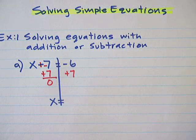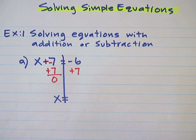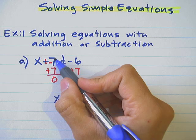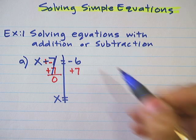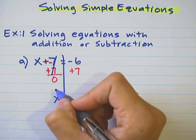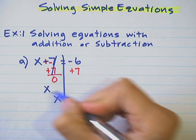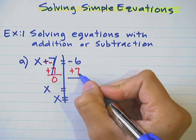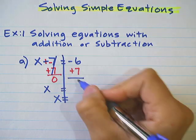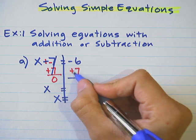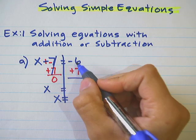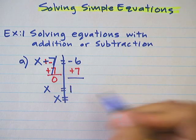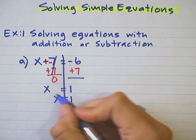Regardless, you want to make sure that you eliminate it and cancel it out. That becomes 0, and you're left with x on this side equaling negative 6 and a positive 7. You have more positives left — six zero pairs — so now we have 1 as the final answer.